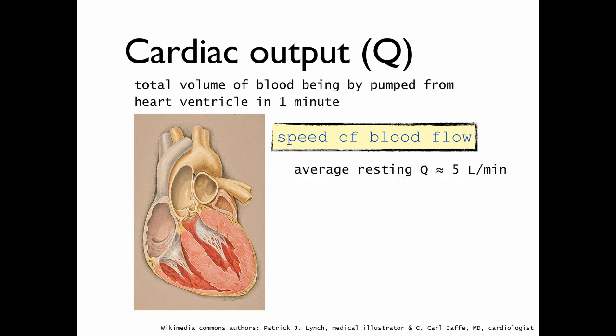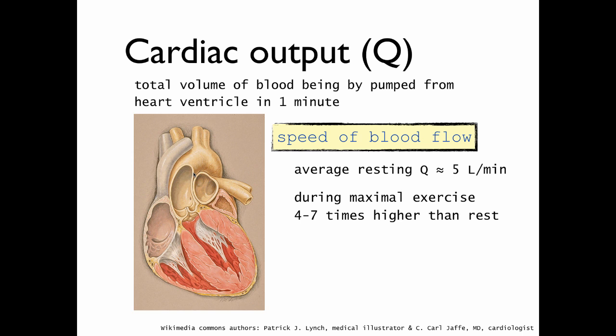At rest, an average resting cardiac output is about 5 litres per minute. Smaller people will have a lower cardiac output, and larger people will have a larger cardiac output. During maximal exercise, cardiac output will be 4 to 7 times higher than rest. So in an untrained individual, we'll see it between 18 to 20 litres per minute, and in some of our elite endurance athletes, it will be much, much higher.